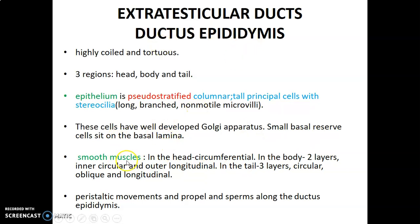The epididymis has smooth muscle cells. In the head, these cells are circumferential or circular. In the body, you have two layers: an inner circular and an outer longitudinal layer of smooth muscle cells. The tail of the epididymis has three layers: circular, oblique, and longitudinal. Within the epididymis, you have peristaltic movement by these smooth muscle cells to propel the sperms along the epididymis.